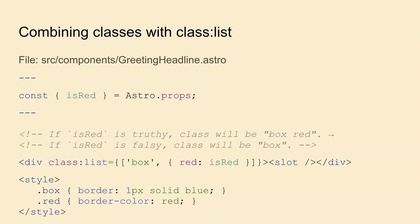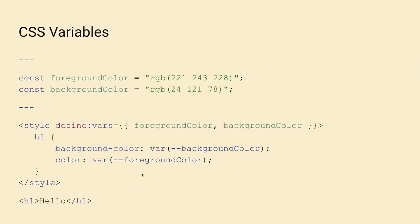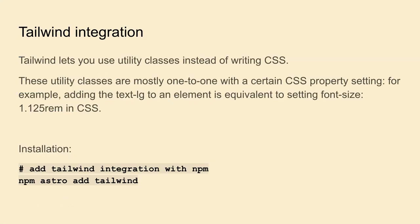You can add a list of classes and also apply conditional class logic — for example, the constant `isRed` controls whether the red class is applied or not. You can also create CSS variables and pass them to styles using the `define:vars` directive, and use them in your style block. This is still isolated within the component unless you pass the `is:global` directive. Of course, you can use any other framework such as Tailwind.